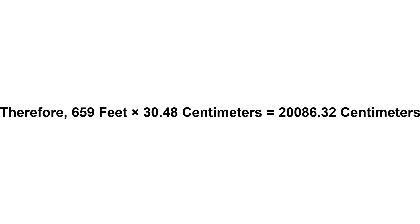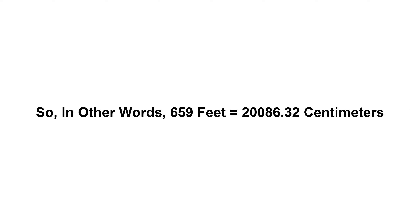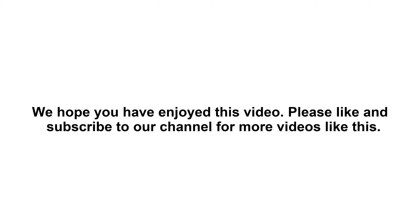Now we have to multiply 30.48 by 659. Therefore, 659 feet times 30.48 centimeters equals 20,086.32 centimeters. So, in other words, 659 feet equals 20,086.32 centimeters. We hope you have enjoyed this video.